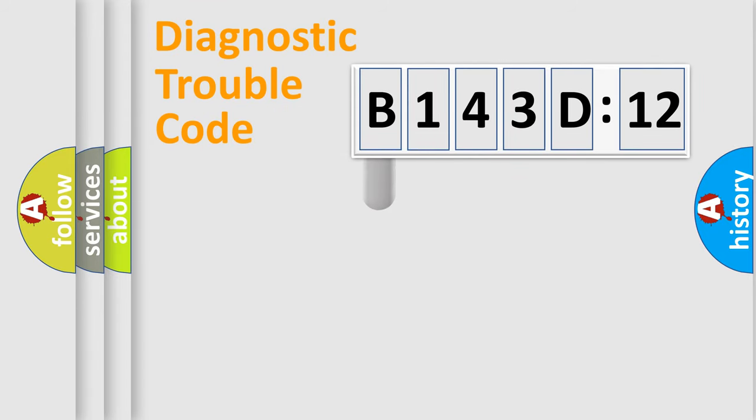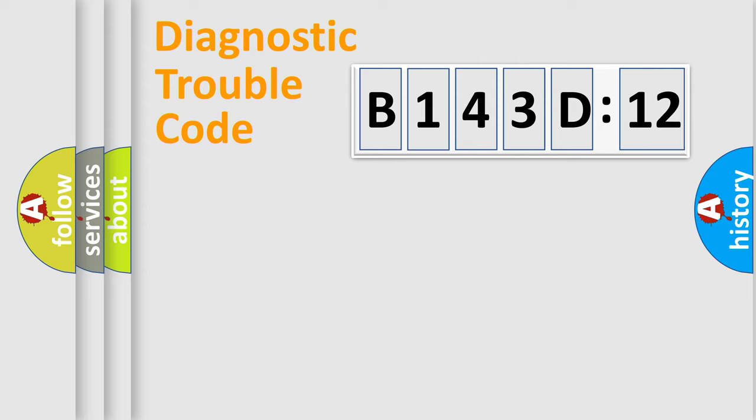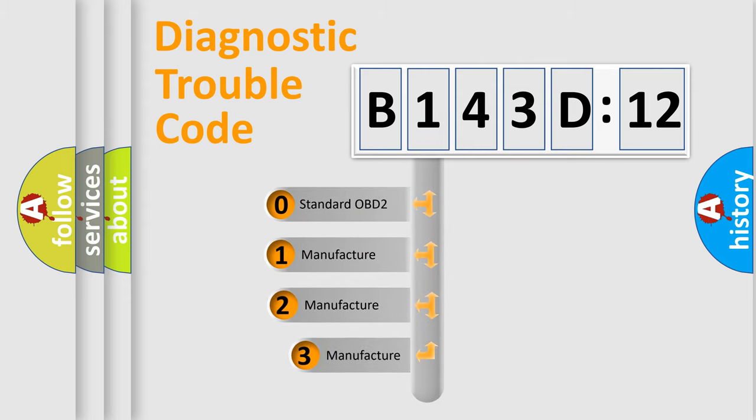First, let's look at the history of diagnostic fault code composition according to the OBD2 protocol, which is unified for all automakers since 2000. We divide the electric system of automobile into four basic units: Powertrain, Body, Chassis, and Network. This distribution is defined in the first character code.